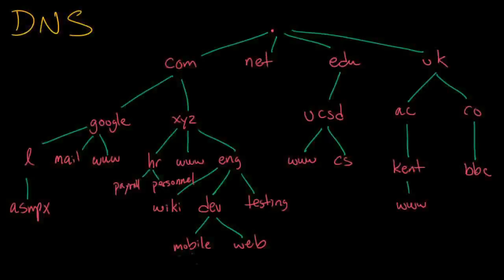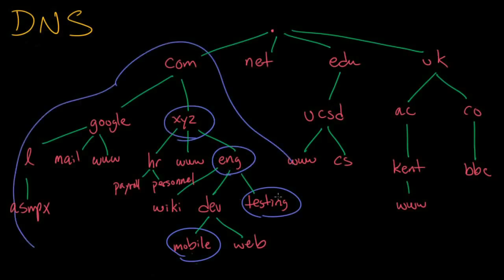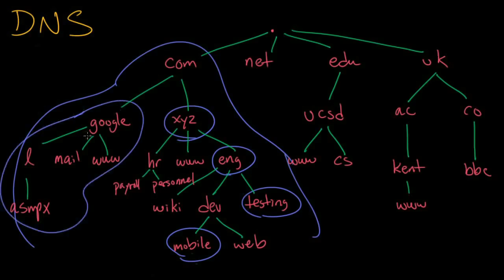Now that we know about zones and delegations, let's take a look at how our fictitious XYZ company fits into the overall DNS structure. When you see a picture like this, you should see domains everywhere. Basically every single one of these nodes in the graph represents a domain. We've got the whole com domain, which encompasses everything below it, the google.com domain, our XYZ domain, our HR domain, and so forth.